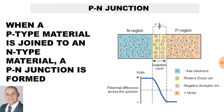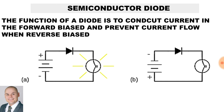A p-n junction is formed when a p-type material is joined to an n-type material, thus creating a depletion layer. A diode will conduct when forward biased and prevent current flow when reverse biased.